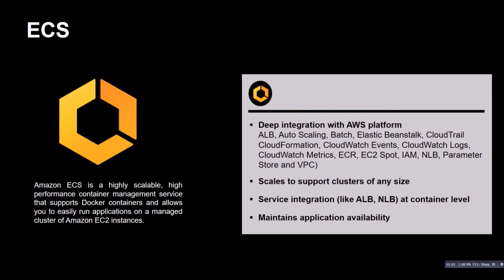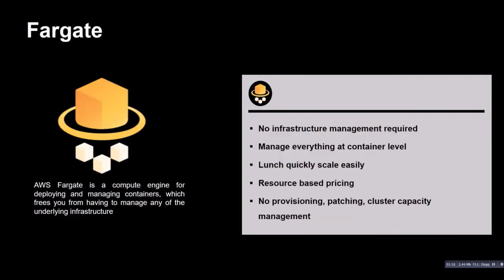With ECS you have to run applications on a managed cluster of Amazon EC2 instances. You have to define a cluster, think about instance types, and cluster size. With Fargate you don't have to bother with this anymore — you don't define the cluster or care for EC2 instances. You can just focus on your services, which are defined by task definitions and services.